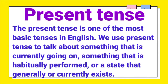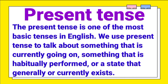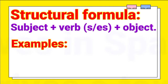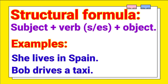Present tense. The present tense is one of the most basic tenses in English. We use present tense to talk about something that is currently going on, something that is habitually performed, or a state that generally or currently exists. Structural formula: Subject plus verb with S or ES plus object.